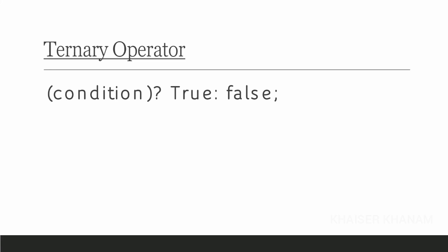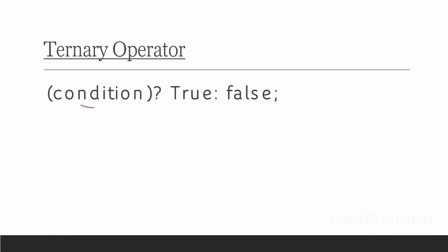This is the syntax of the ternary operator — we write one condition here. If this condition becomes true, then the first statement will be printed. If this condition becomes false, then the second, false statement will be printed. The syntax is: condition, question mark, true statement, colon, false statement. So the ternary operator symbols are question mark and colon.